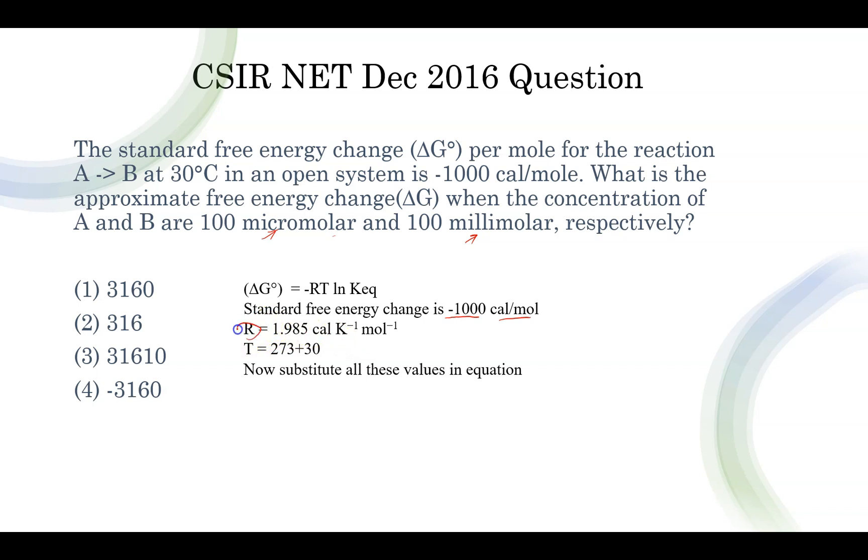Then R is the known gas constant. Since we have taken calorie per mole for standard free energy change, gas constant also you are supposed to take in calorie. So in calorie it is 1.985 cal/K/mol. Units you have to mention properly. Temperature is given 30 degrees. So you have to always convert into Kelvin. That's why temperature, 270 plus 30 it will be 303 Kelvin.